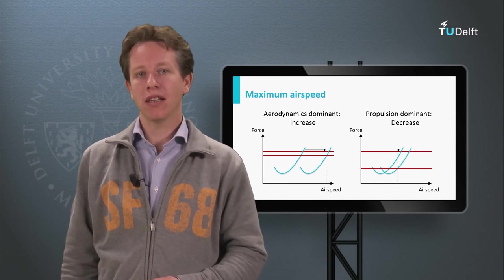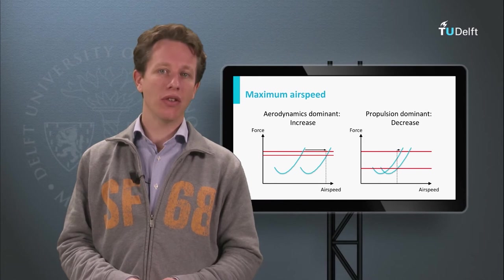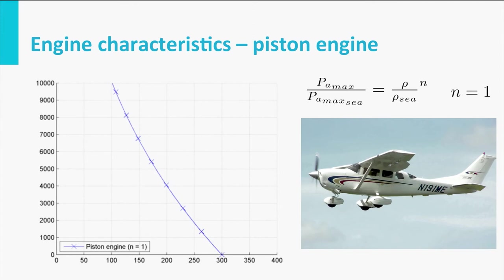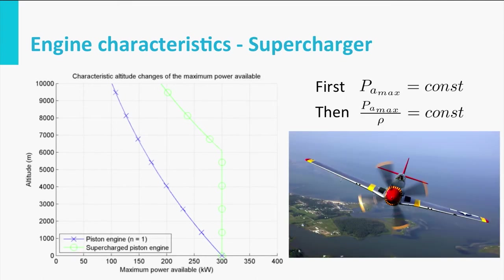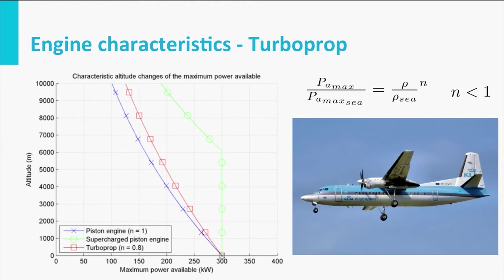Now, that does not really solve our problem completely. I am therefore going to consider three characteristic altitude changes of the maximum power available. The first is an engine with maximum power available directly proportional to air density. The second is a supercharged piston engine with a propeller which has constant maximum power available up to a specific altitude, and beyond that altitude it behaves just like the first case. The third case is typical for a turboprop aircraft. A turboprop typically shows behavior in which maximum power available divided by maximum power available at sea level equals the ratio of air density to air density at sea level to the power n, with n being smaller than 1. If we have such a relation, we can calculate the maximum power available at any specific altitude as indicated in the diagram you see here.